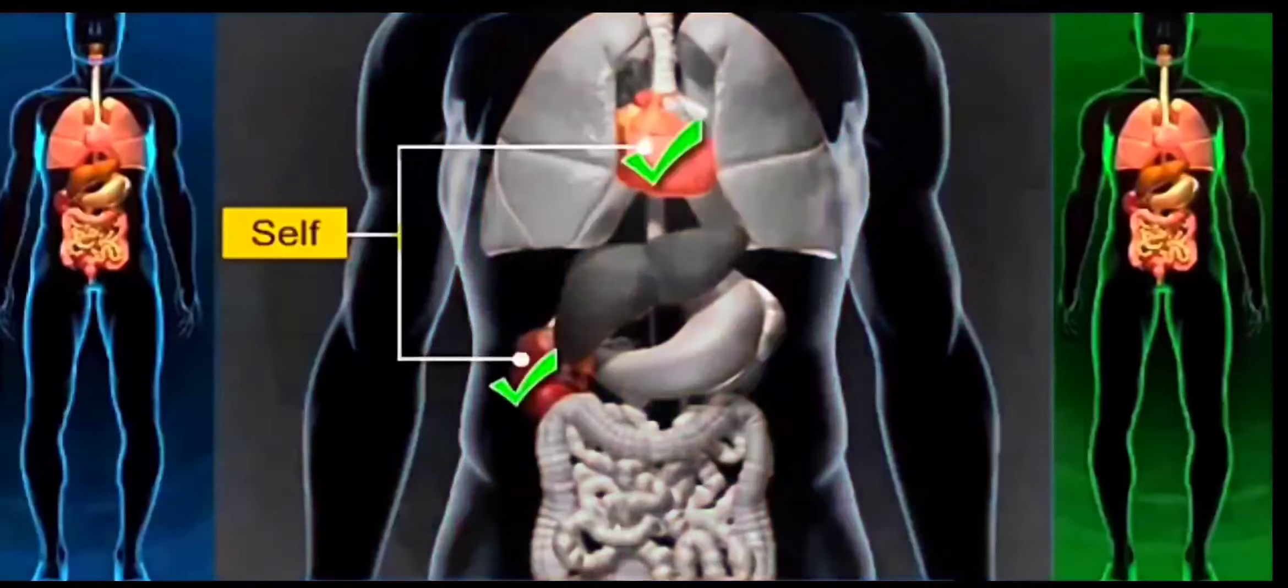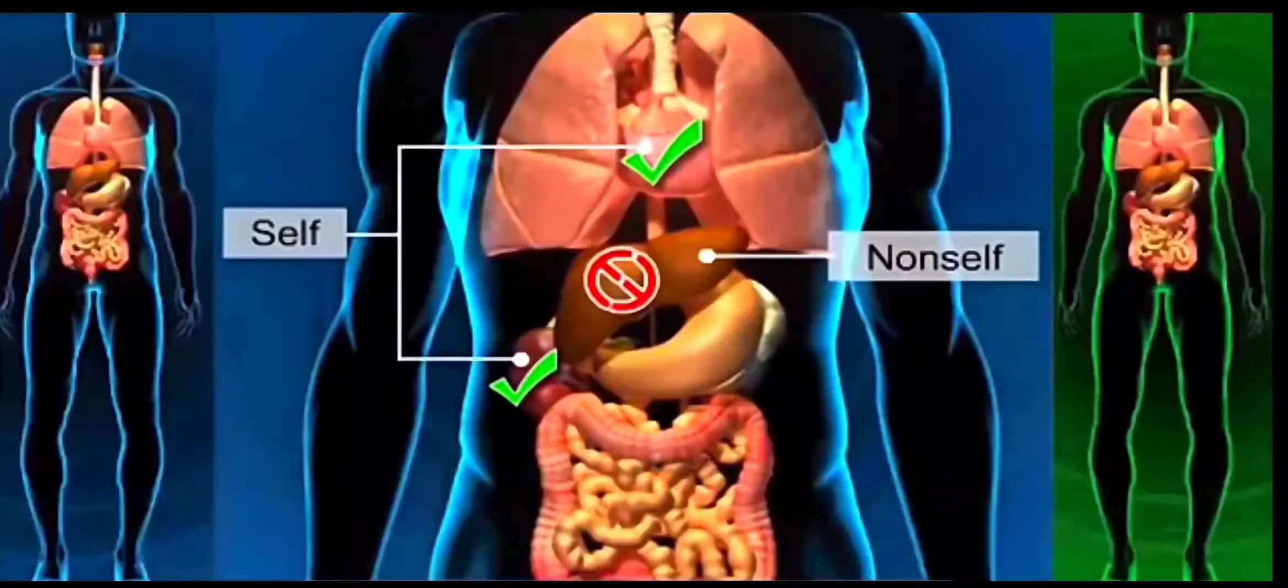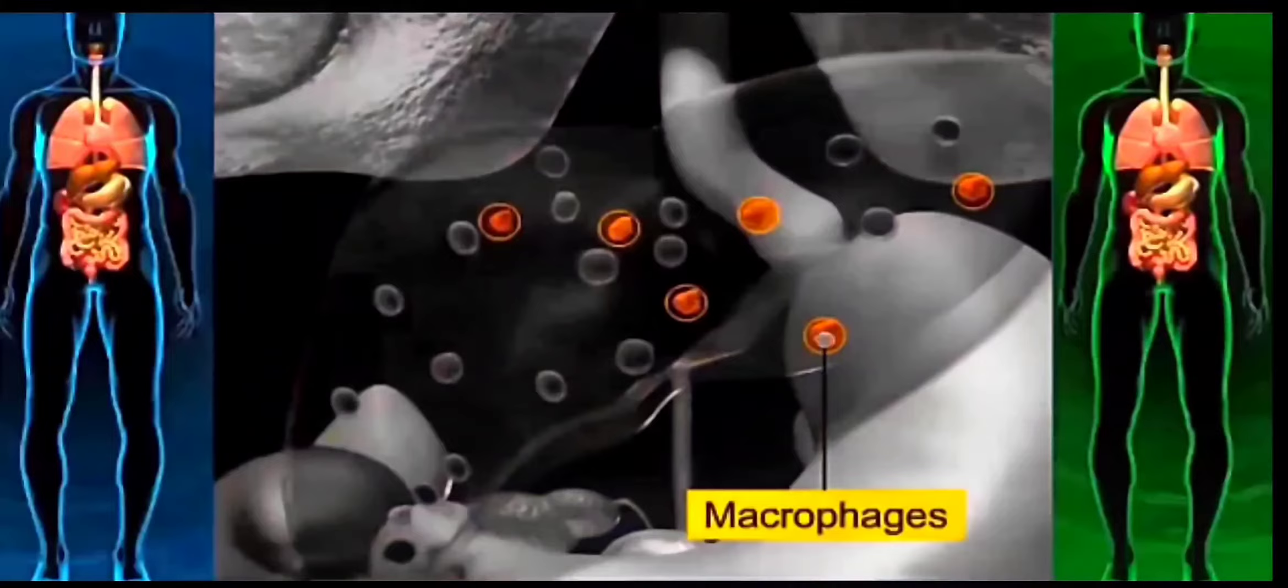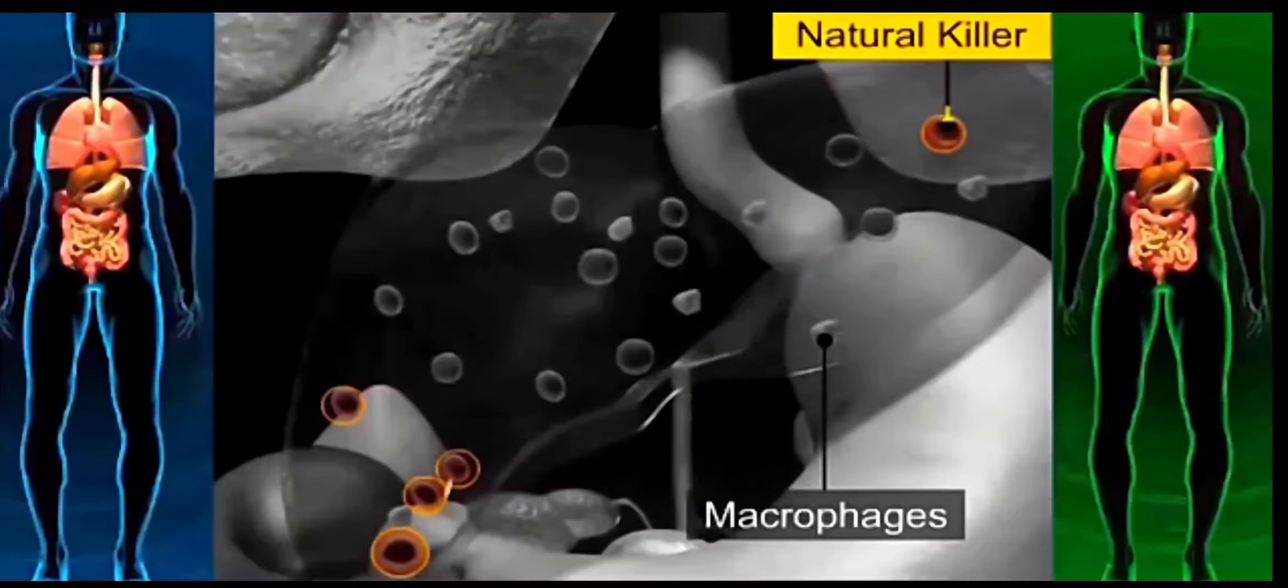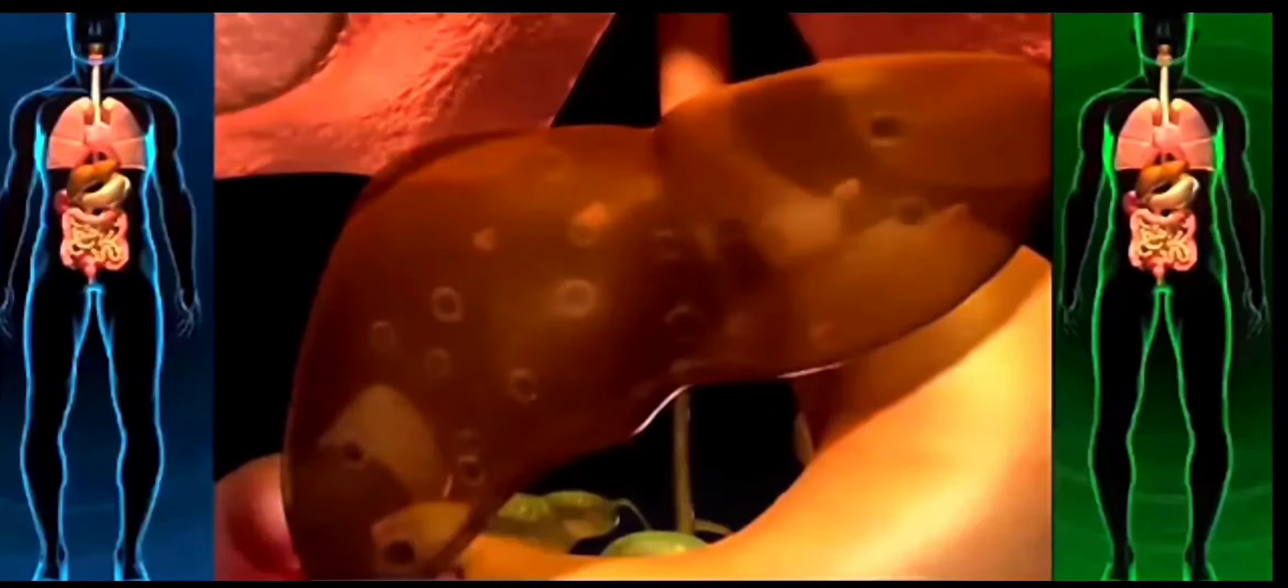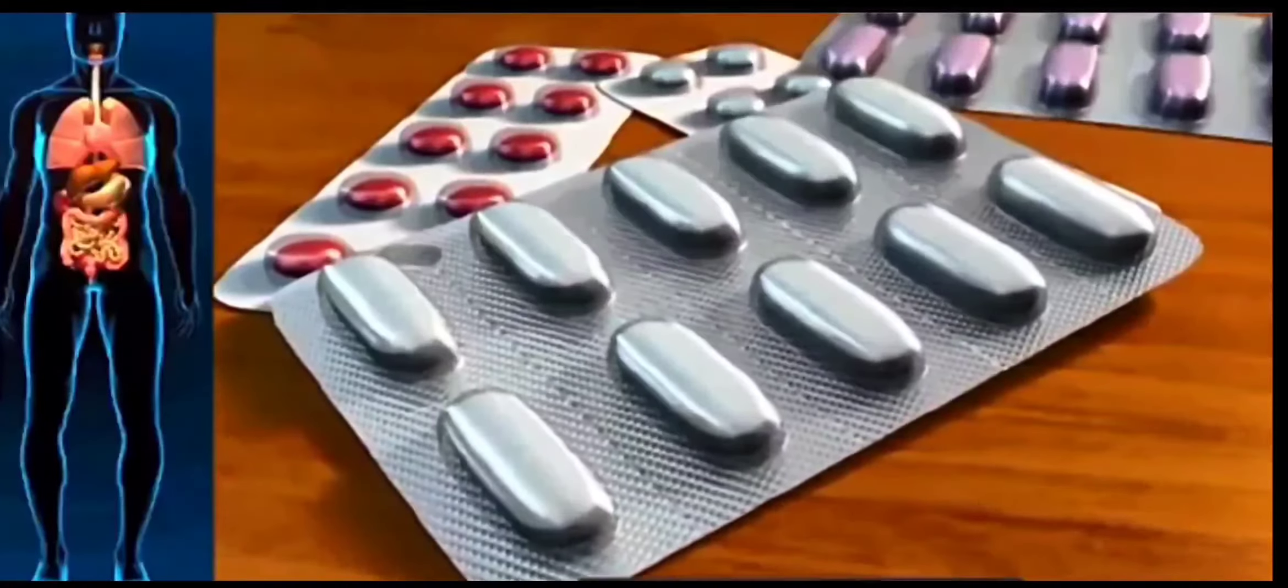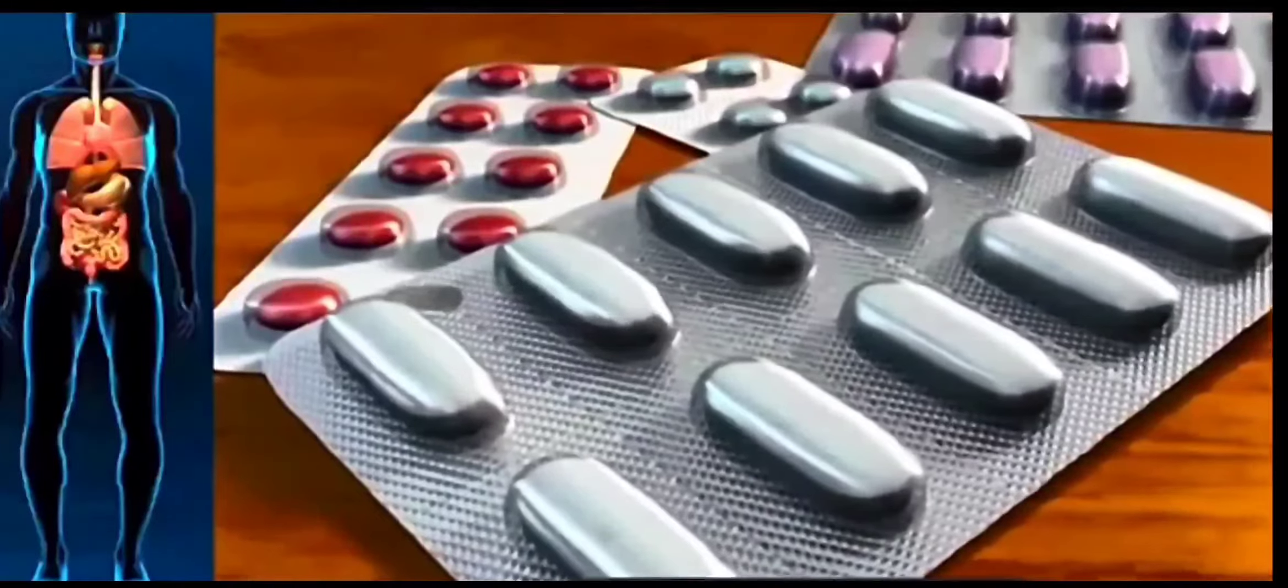This is because our body can identify between self-cells and non-self-cells. This ability of identifying the self-cells and non-self-cells is done by certain cells which are called macrophages, natural killer cells, or T lymphocyte cells. This type of immunity is called cell mediated immunity. Such people who go for organ transplantation will always have to take medicine. These medicines are called immunosuppressants.